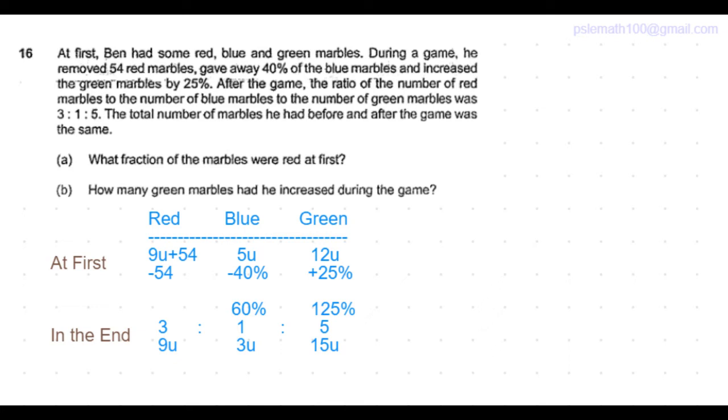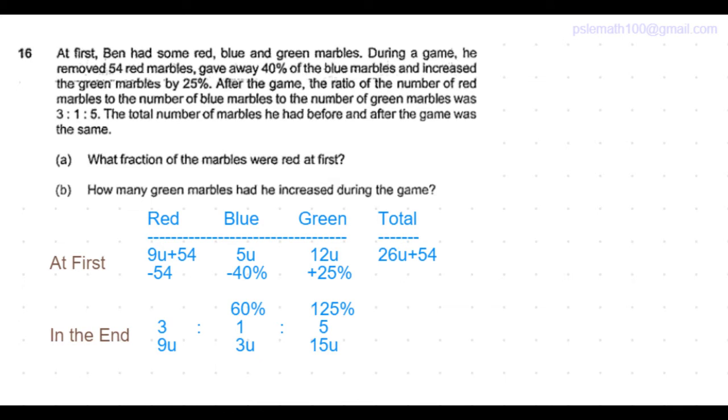So the total number of marbles at first is 9 units plus 54 plus 5 units plus 12 units. That's a total of 26 units plus 54. The total number of marbles in the end is 9 units plus 3 units plus 15 units. That's a total of 27 units.